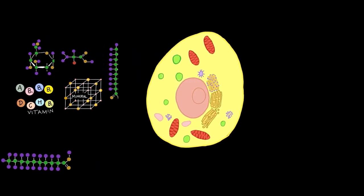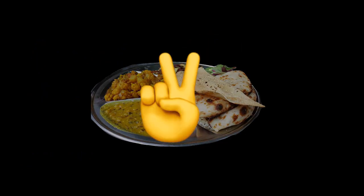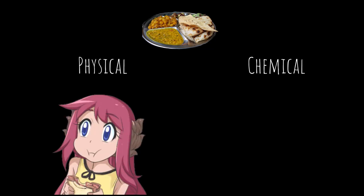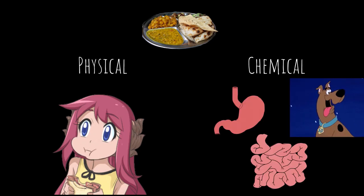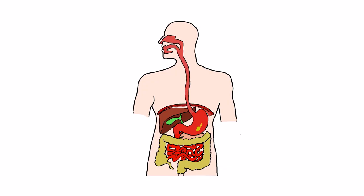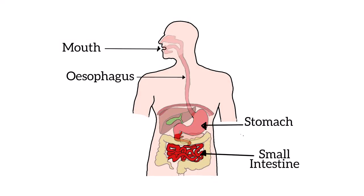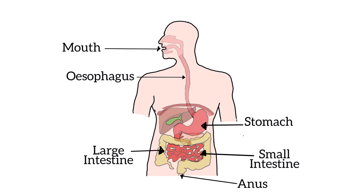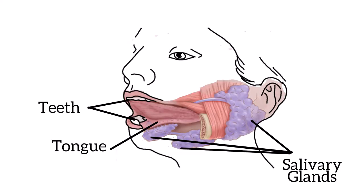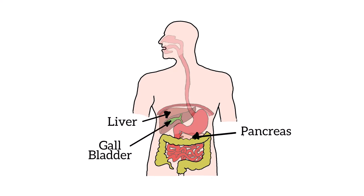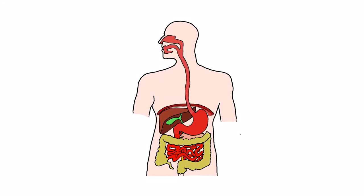Food is broken down in two ways: physical and chemical. Physical breakdown happens when we chew with our teeth. Chemical breakdown involves enzymes in our body reacting with food. The digestive tract runs from our mouth to anus, including the mouth, esophagus, stomach, small intestine, large intestine, and anus. There are also accessory organs that help in digestion: teeth, tongue, salivary glands, pancreas, liver, and gallbladder.